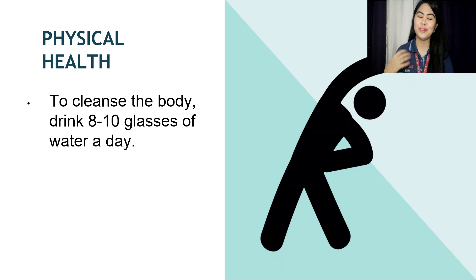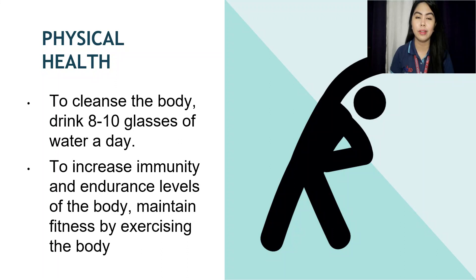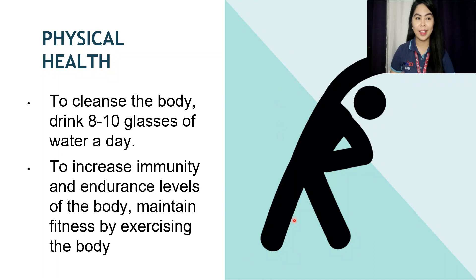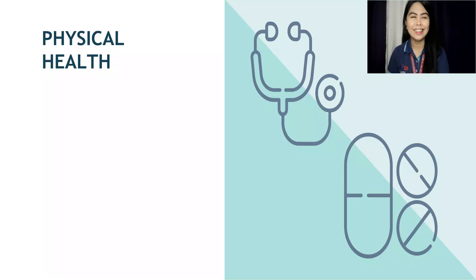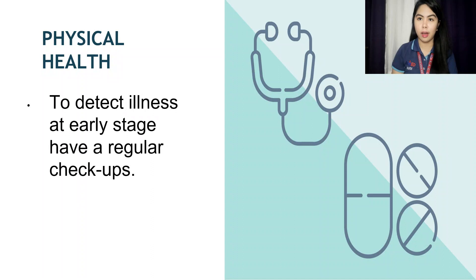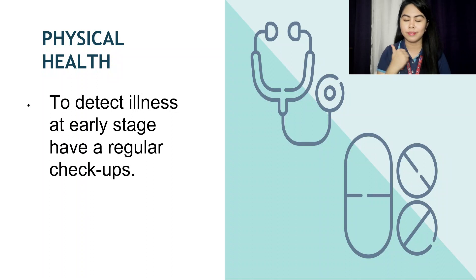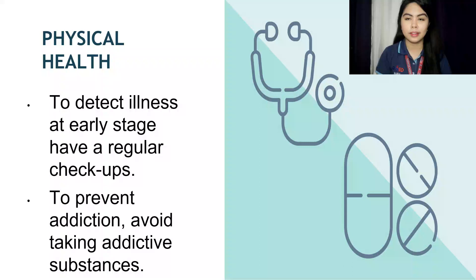Make sure you drink a lot of water to keep yourself hydrated. To increase immunity and endurance levels of the body, maintain fitness by exercising. Exercising is quite hard to do regularly because we tend to prioritize other things. To detect illness at an early stage, have regular check-ups and see your doctor regularly to monitor your health status. To prevent addiction, avoid taking addictive substances — no to illegal drugs.